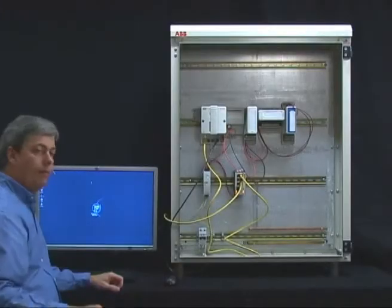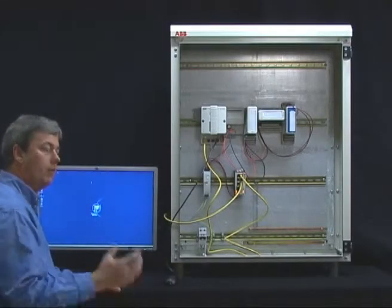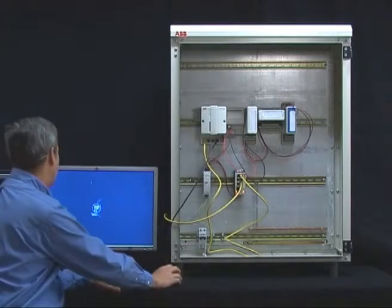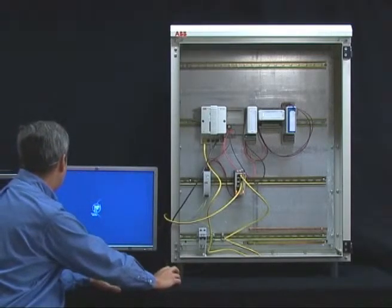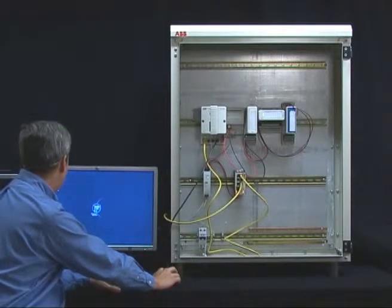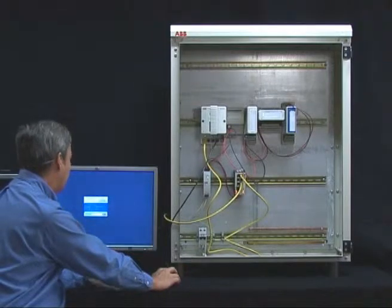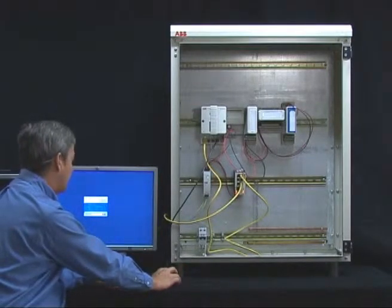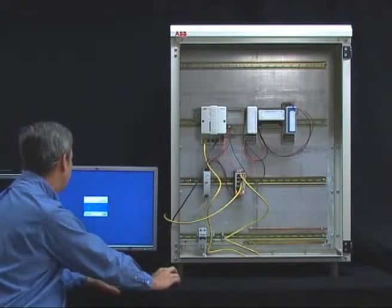Now that the OPC server is up and running, we need to configure the Compact HMI to get the data into the HMI application. We open up the Plant Explorer, and it's from here you can configure which data you would like to receive into the HMI application.